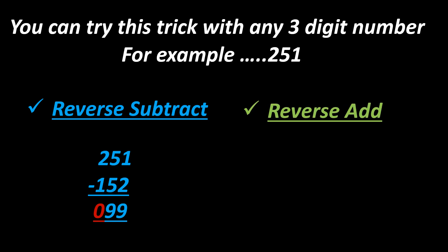Let's reverse add: 099 plus 990. Answer is 1089.